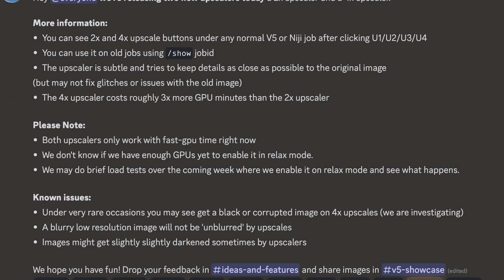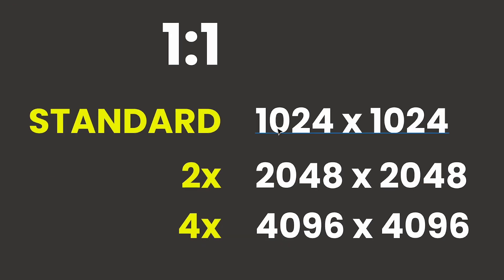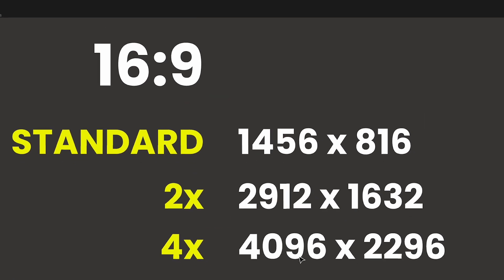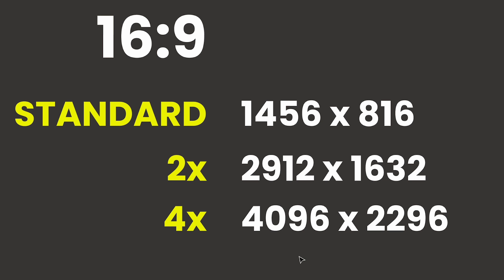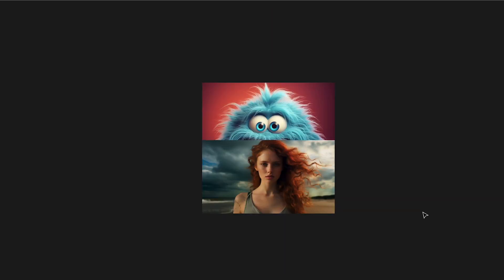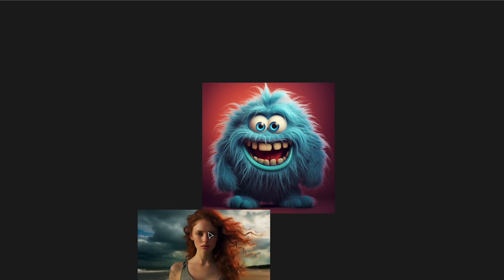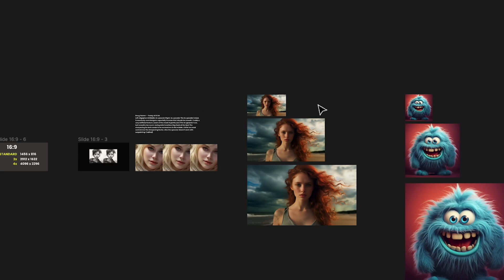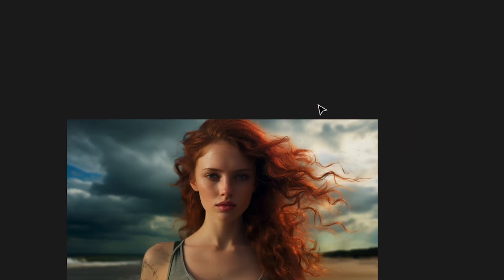The upscaler is subtle and tries to keep details as close as possible to the original image. On the resolution side, starting with a square image of 1024 by 1024, doubling it gives you a 2K image at 2048 by 2048, and the 4x takes you all the way up to 4096 by 4096. It's important to note that non-square images won't yield the same pixel count, so if you want maximum pixels, work in square format.